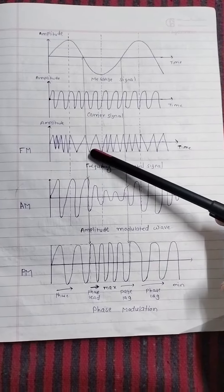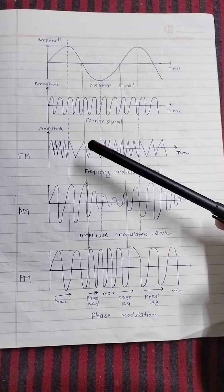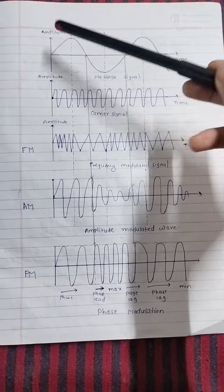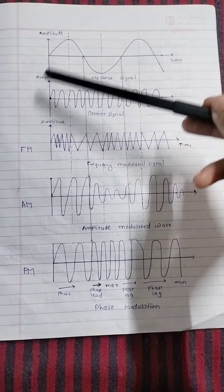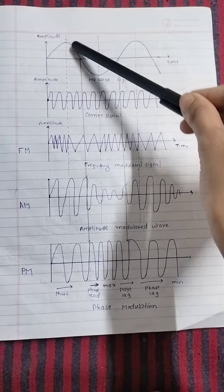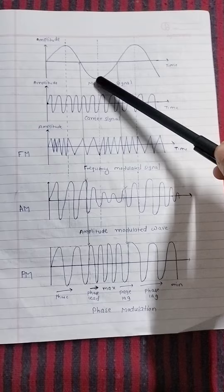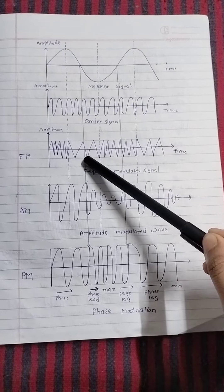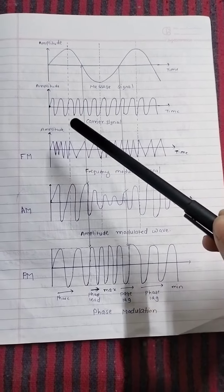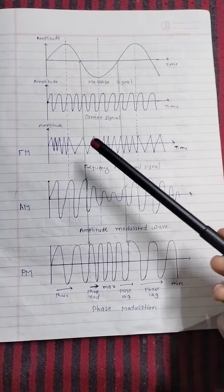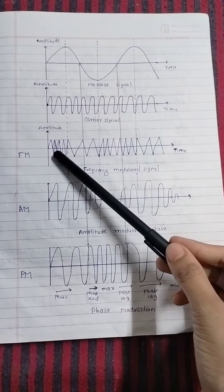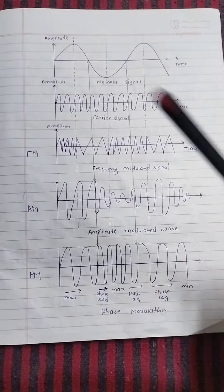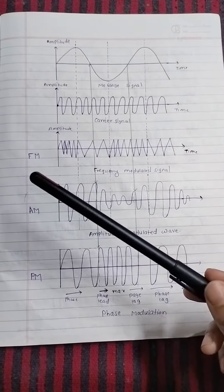In frequency modulation, when the original signal goes from low to high, the frequency of the carrier signal increases. But when it goes from high to low, the frequency in the carrier signal decreases — it becomes compressed. And here it is stretched. So that is about frequency modulation.